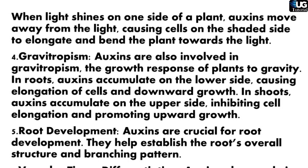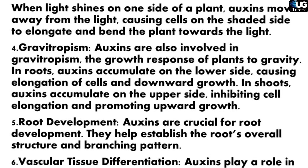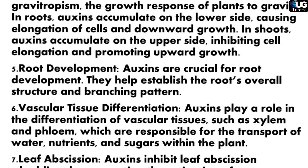4. Gravitropism: Auxins are also involved in gravitropism, the growth response of plants to gravity. In roots, auxins accumulate on the lower side, causing elongation of cells and downward growth. In shoots, auxins accumulate on the upper side, inhibiting cell elongation and promoting upward growth.